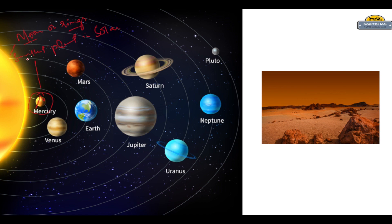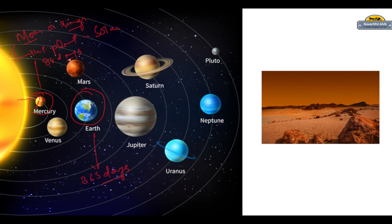The key facts about Mercury: number one, it is the smallest planet in the solar system; number two, it is the closest planet to the sun; number three, it doesn't have any moon or any ring. And the last fact is that Mercury takes 88 days to complete one revolution around the sun, compared to Earth which takes around 365 days. Mercury covers a shorter orbital distance around the sun.